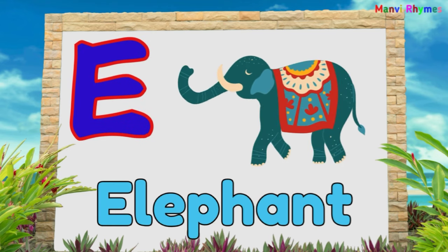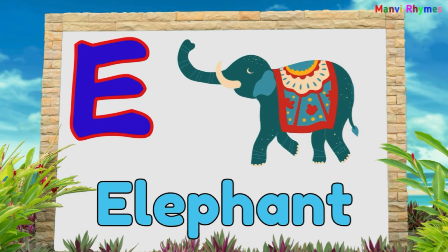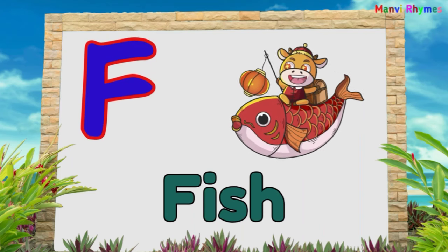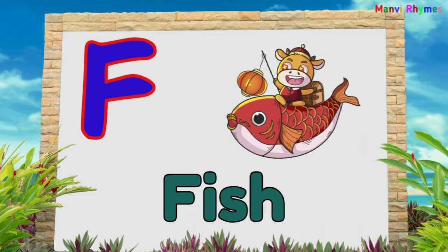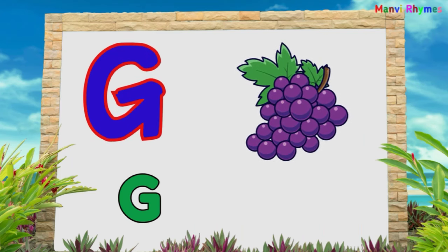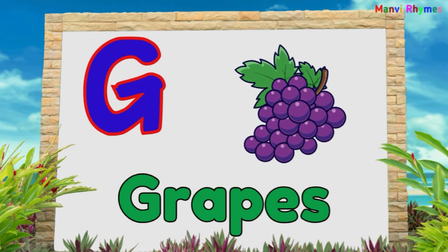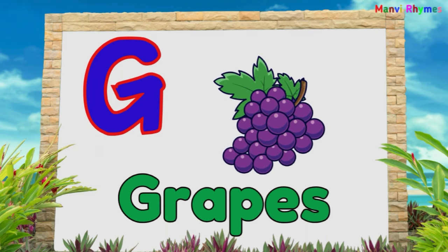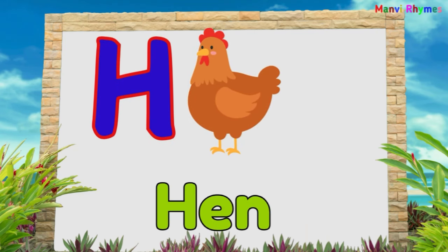E for Elephant. F for Fish. G for Grape. H for Hand.